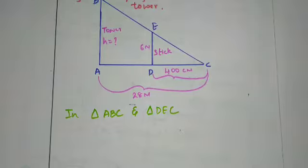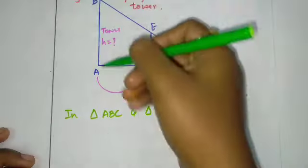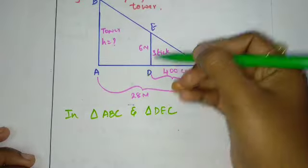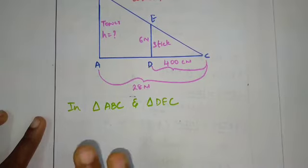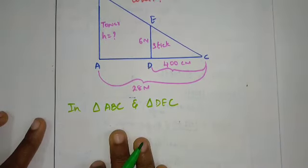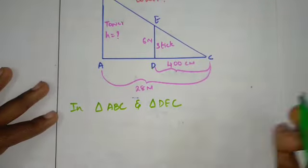Now you can see the mistake. ABC and triangle DEC. Now they are similar triangles.